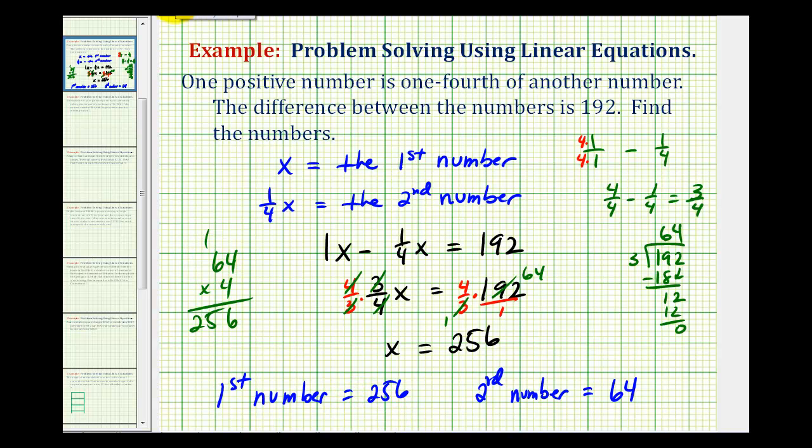And if you want to verify that this was the correct answer, remember the difference has to be 192. So to check this, we would have 256 minus 64, which would give us 192. Which verifies our answer is correct.